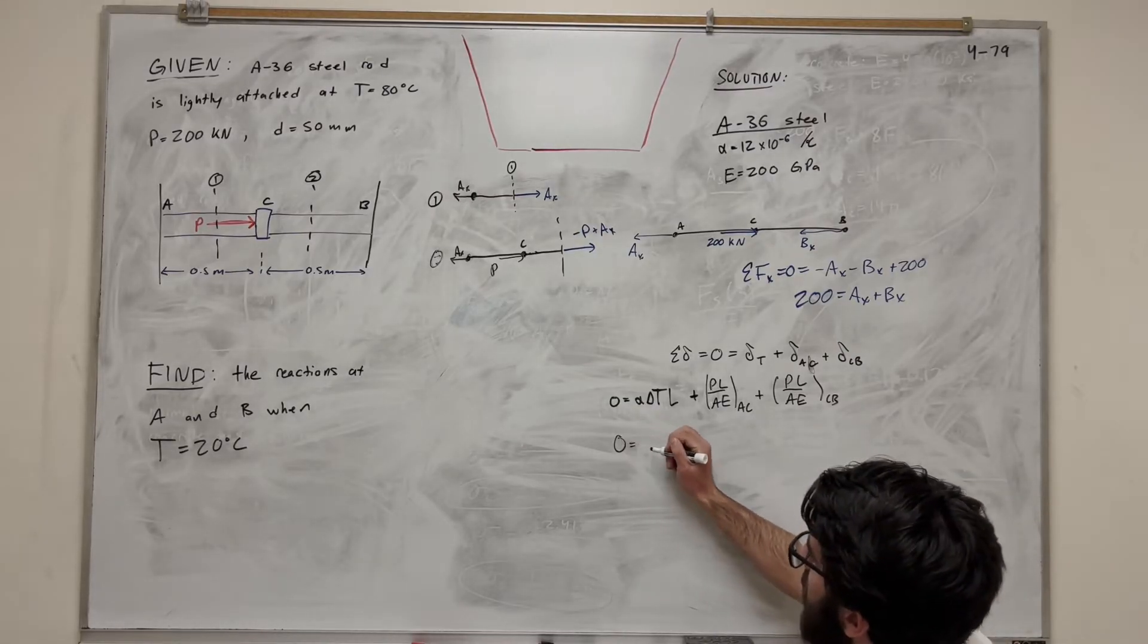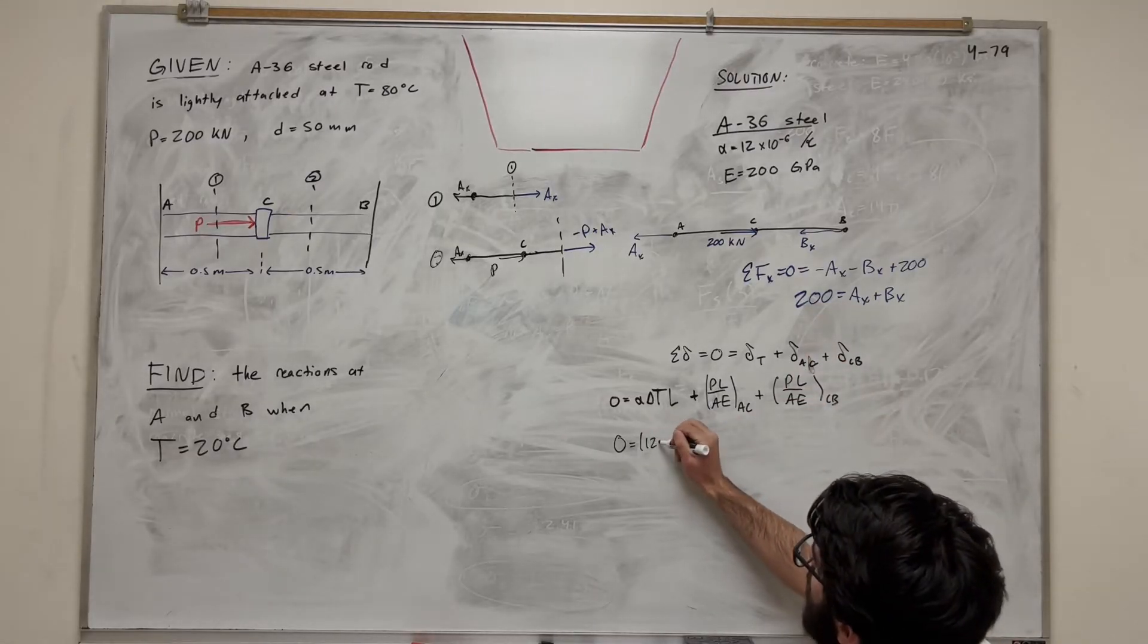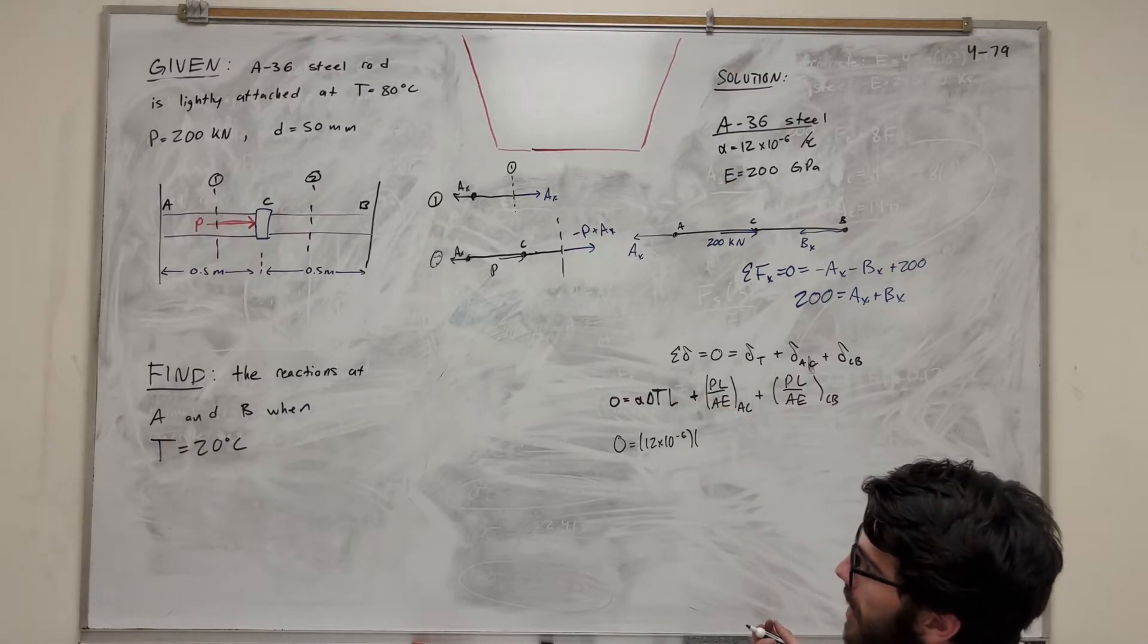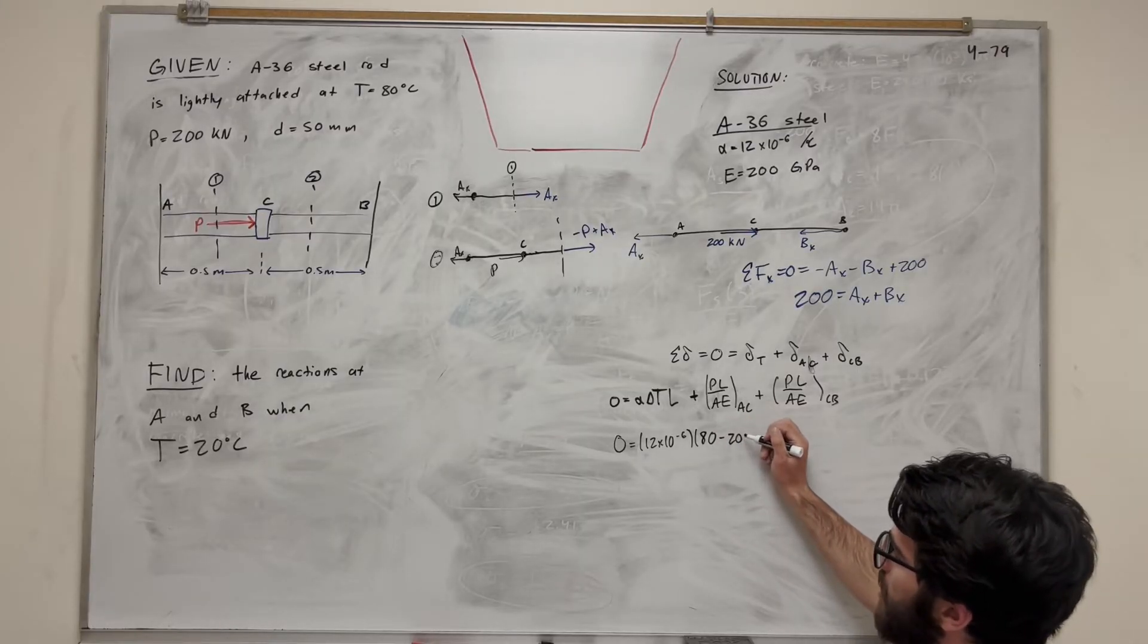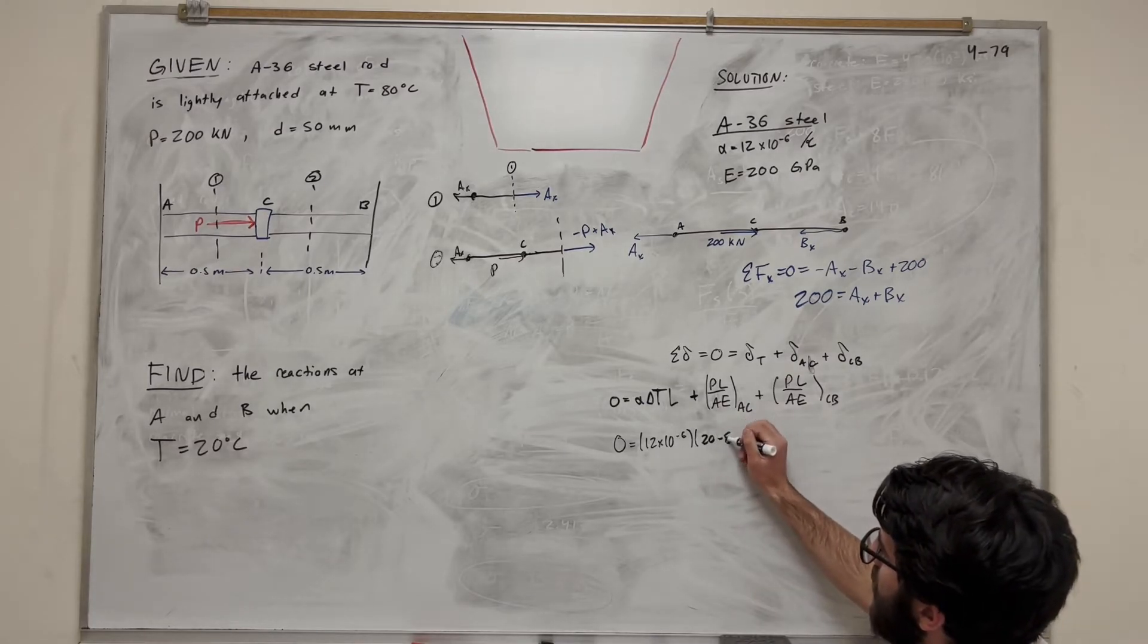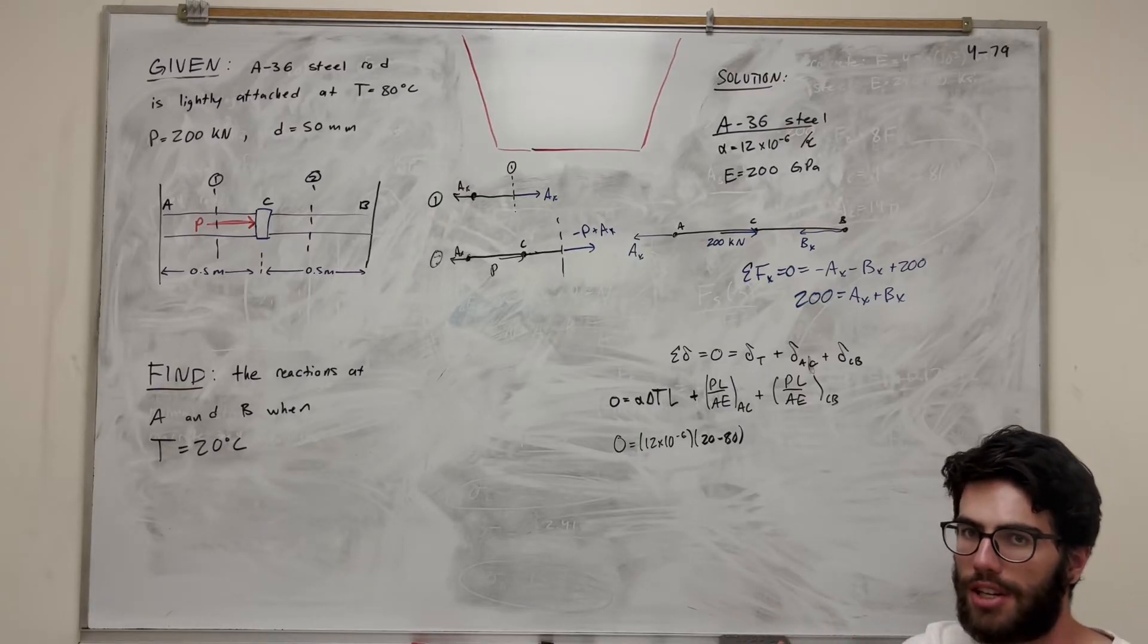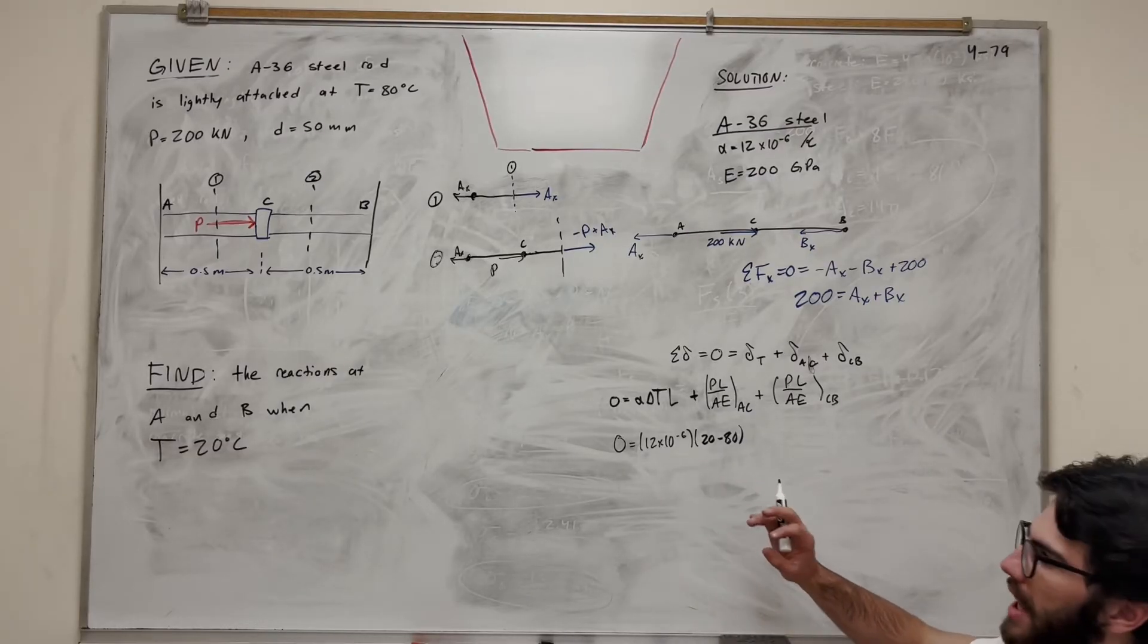So going on to our next line. So let's plug in what we know, right? Alpha is 12 times 10 to the negative 6. It's a change in temperature, so T final minus T initial. So we're starting at 80 degrees Celsius. And we go to 20 degrees Celsius. The temperature of final minus temperature initial. I did it backwards. 20 minus 80. And you'll notice this is going to give us a negative number. Now that's right because a negative number means we're shrinking in temperature. A smaller temperature means that we're going to want to compress. We're going to get smaller. So this is going to become a negative number, and that's important.